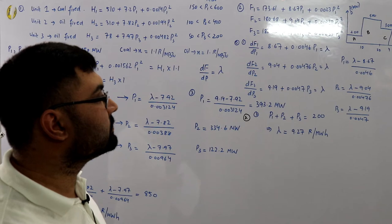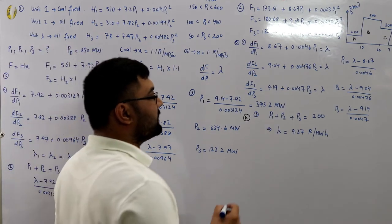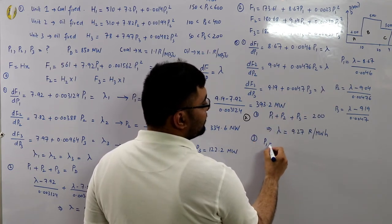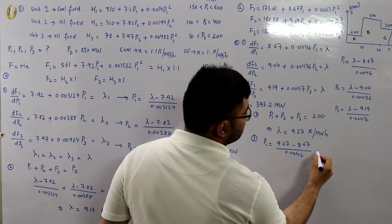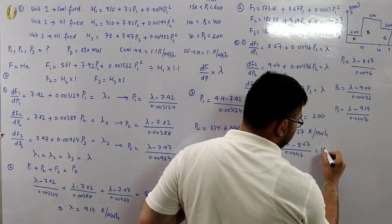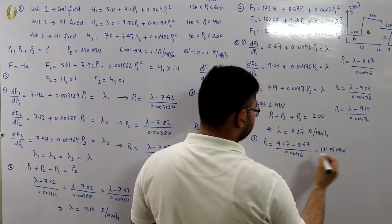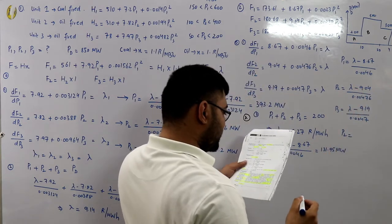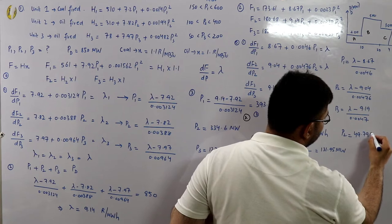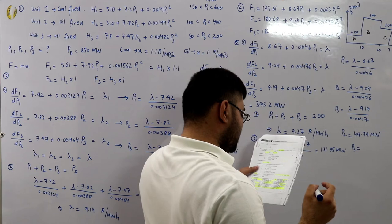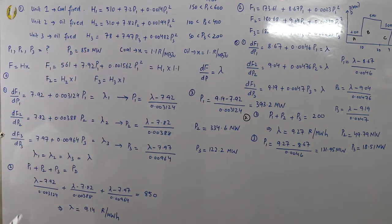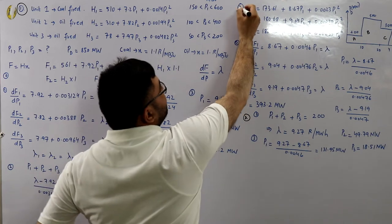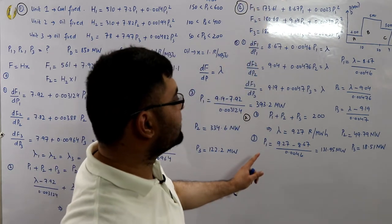Step number 3 for interval A: p1 = (9.27 − 8.67)/0.0046 = 131.95 MW, p2 = (9.27 − 9.04)/0.00476 = 49.79 MW, p3 = (9.27 − 9.19)/0.0047 = 18.51 MW. No economic limits to check. Summing: 131.95 + 49.79 + 18.51 ≈ 200 MW. ✓